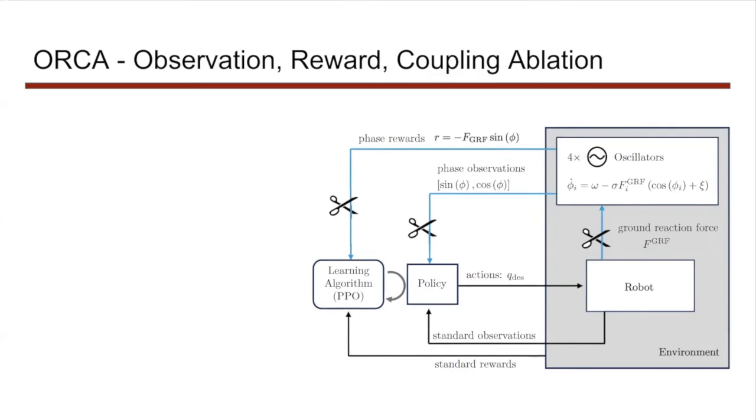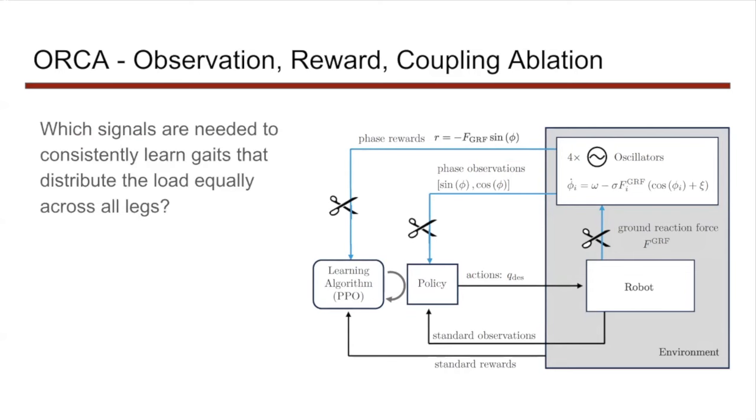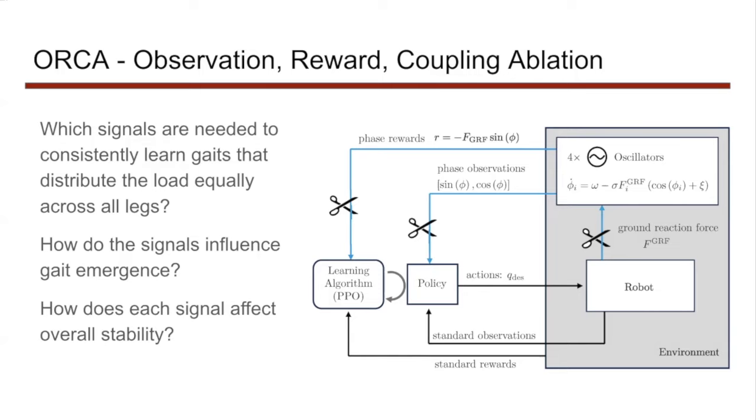Through an ablation study of the signals in blue, we answered these questions. Which signals are needed to consistently learn gaits that distribute the load equally across all legs? How do the signals influence gait emergence? And how does each signal affect overall stability?